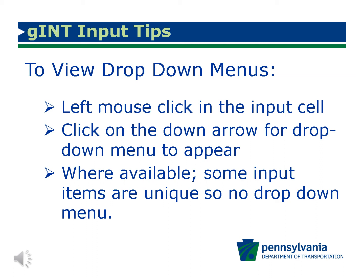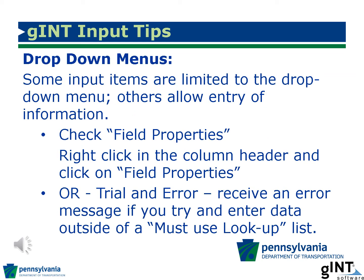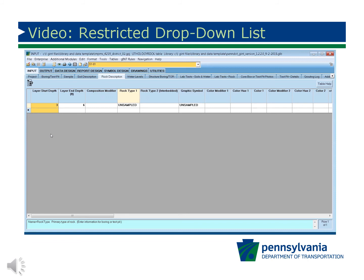To view a drop-down menu, left mouse click in the desired input cell and click on the down arrow for the drop-down menu to appear. Where drop-down menus are used, keep in mind that some input item drop-down lists allow data entry while others do not. To check if the list allows entry of items beyond the list provided, you can left click in the column header and click on Field Properties to see if you must use lookup or can enter your own item. You may also use a trial-and-error method; if the list is limited, you will receive an error message.